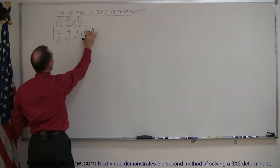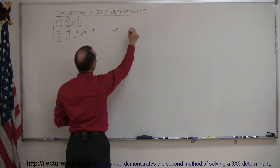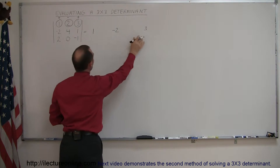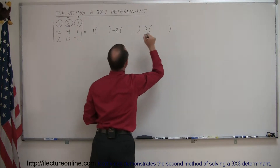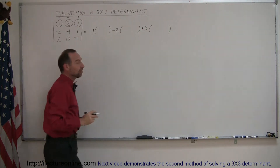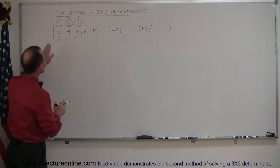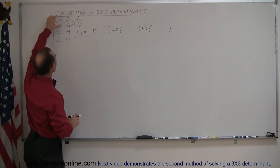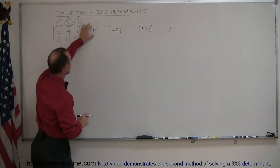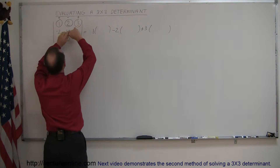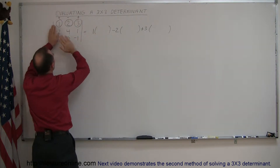So we take the first element, put a plus in front of it. We take the second element, put a minus in front of it. We take the third element and put a plus in front of it. Each of those elements are going to be multiplied by the remaining determinant portion when we block out the column and the row in which that element is located.